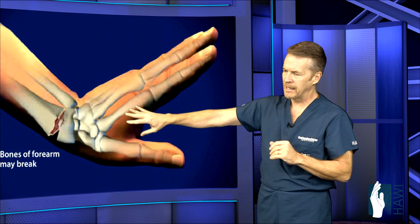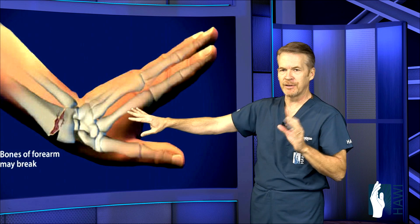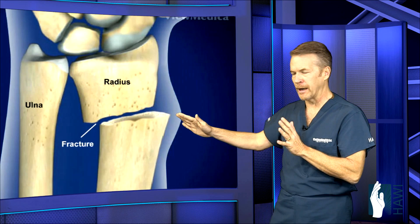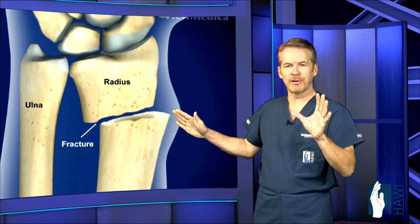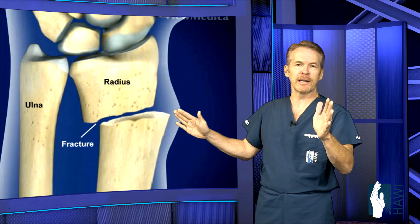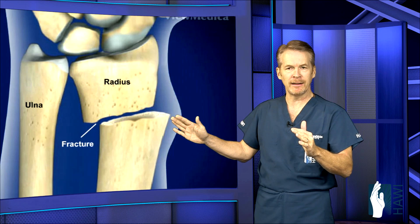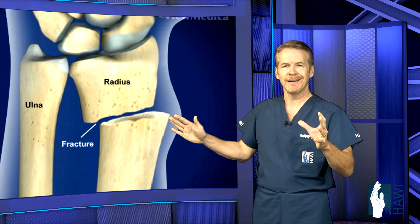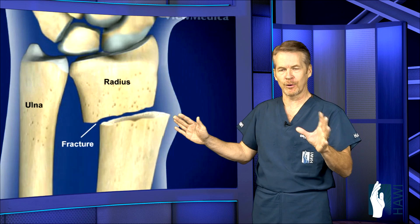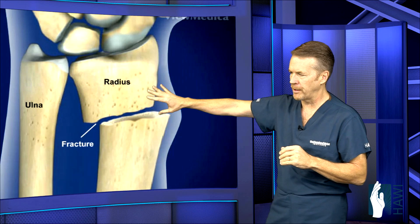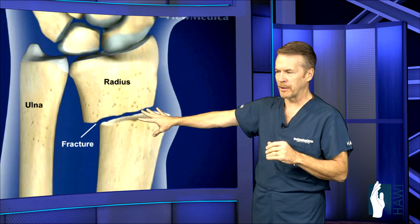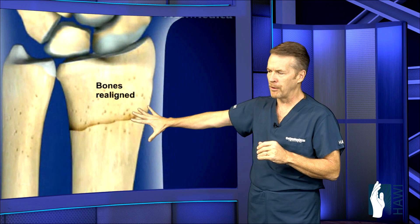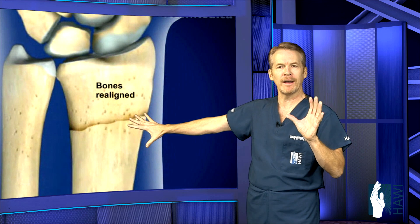Now let's take a look at an actual displaced radius fracture. Fractures usually are two types: either they're normally aligned, or if they're not, you've got to get them normally aligned. In a kid you can usually pop them back in place and they'll stay. In an adult, it usually takes surgery to correct the problem. Here's a displaced fracture where the ends are not lined up at all, and the next image shows the bones realigned, or what we call anatomic alignment.